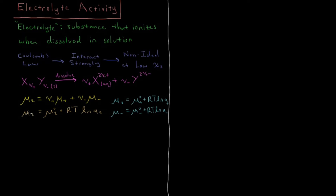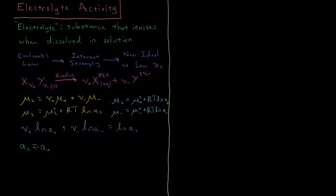Substituting these expressions into the first equation, we find that ν+ ln(a+) plus ν− ln(a−) equals the natural log of the activity of the solute — the whole electrolyte. Taking the exponential of both sides and rearranging, the activity of the solute equals the activity of the cation to the power ν+ times the activity of the anion to the power ν−.